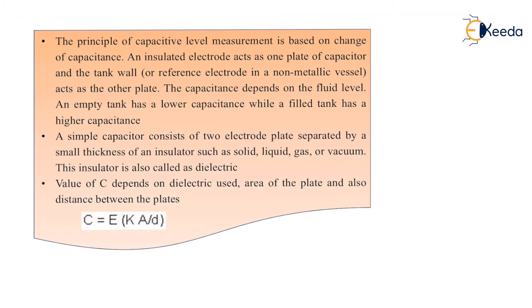The principle of capacitive level measurement is based on the change of capacitance. As the capacitance level changes, the level of the liquid changes. An insulated electrode acts as one plate of the capacitor and the tank wall acts as the other plate. An empty tank has lower capacitance while a filled tank has higher capacitance. A simple capacitor consists of two electrode plates separated by a small thickness of insulator such as solid, liquid, gas, or vacuum.